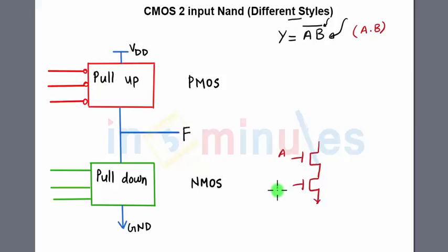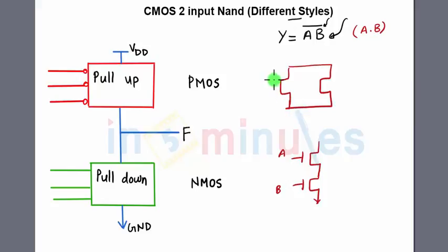The trick here is: if this is my pull-down network, my pull-up network will always be the complement of the pull-down network. This means if A and B are connected in series in the pull-down, then in the pull-up A and B will be connected in parallel. The pull-up is implemented using PMOS transistors, so A is in parallel with B.